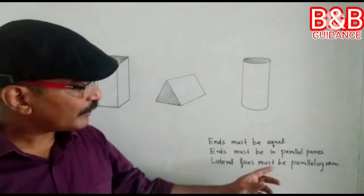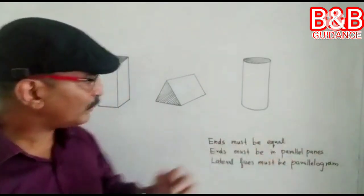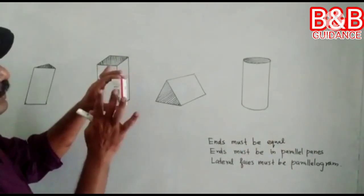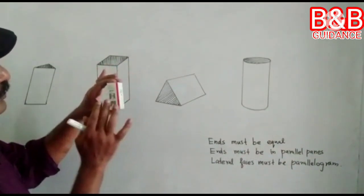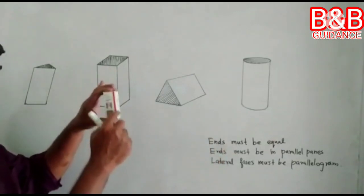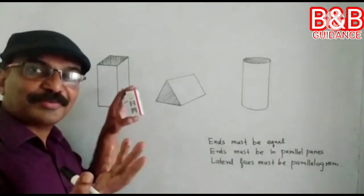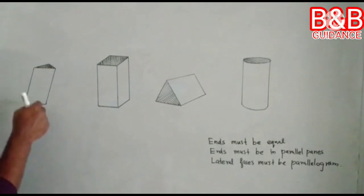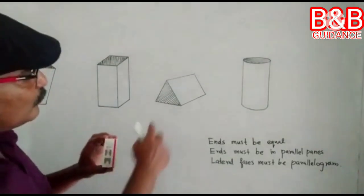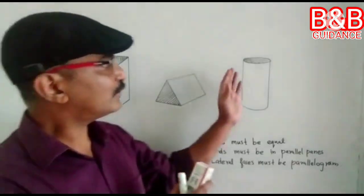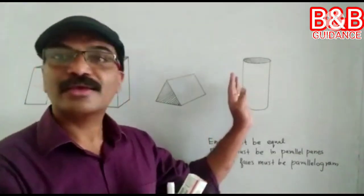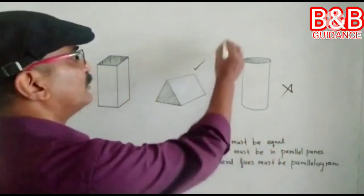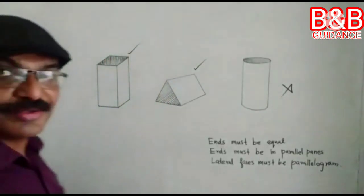Third condition: lateral faces must be parallelograms. This one is a rectangle — and you know, a rectangle is a special case of a parallelogram, so here it is okay. This one is a parallelogram. This one is a rectangle. This one is a rectangle — this is not a prism. This one is not a prism. All the others — this one, this and this — all the others are prisms.